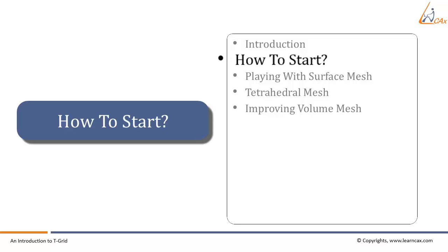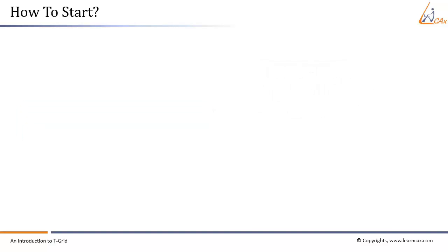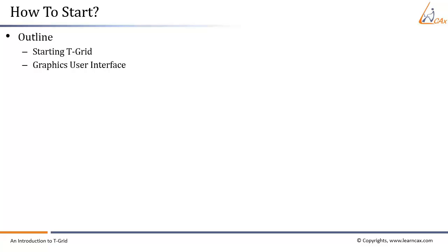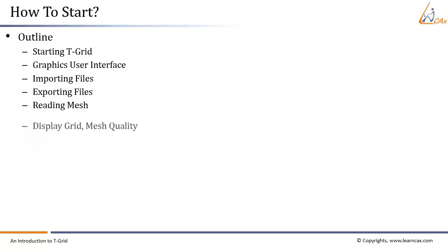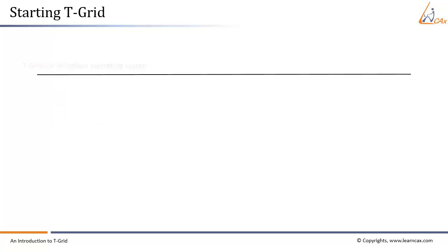Now let's move on to our next chapter. The chapter name is 'How to Start'. The outline of this chapter includes: starting T-Grid, graphics user interface, importing files, exporting files, reading the mesh, display grid, and mesh quality.